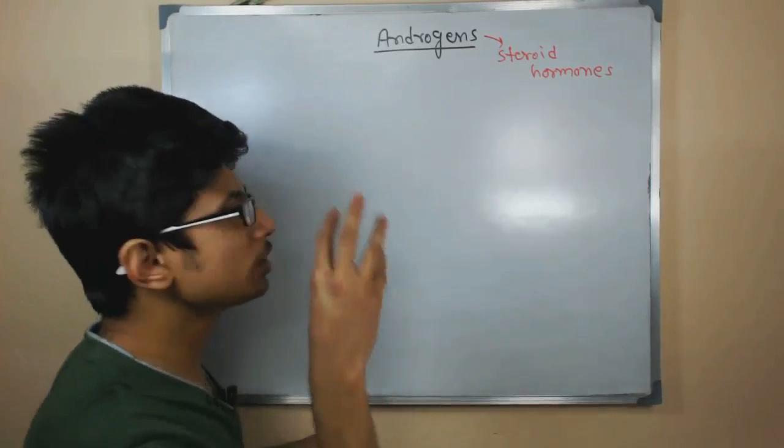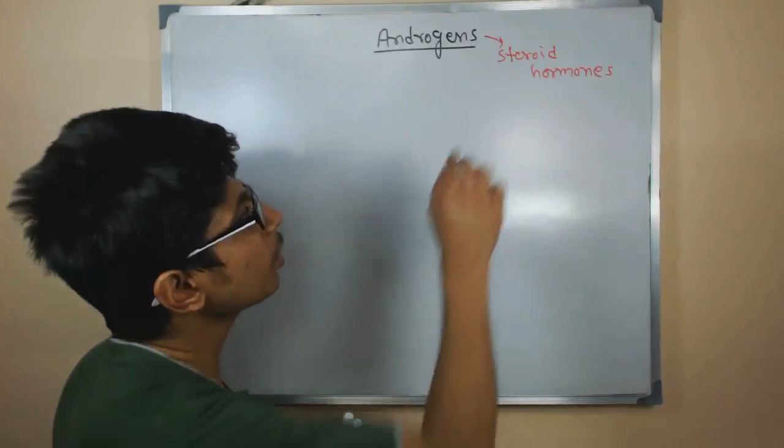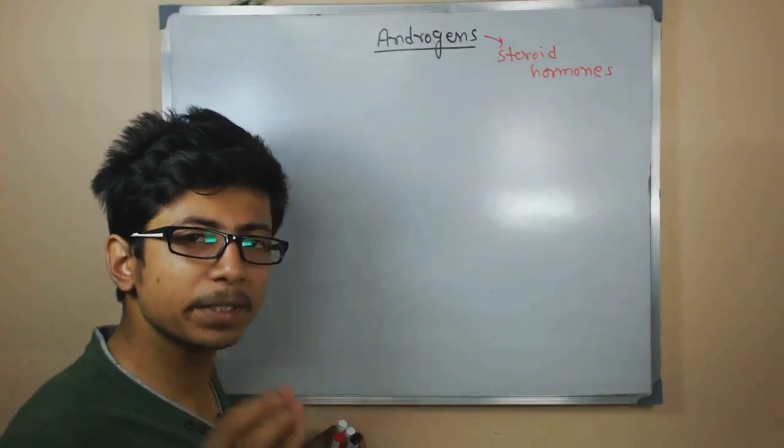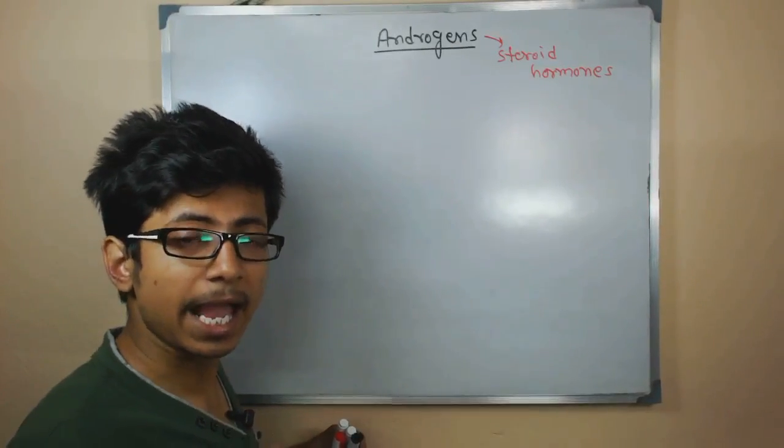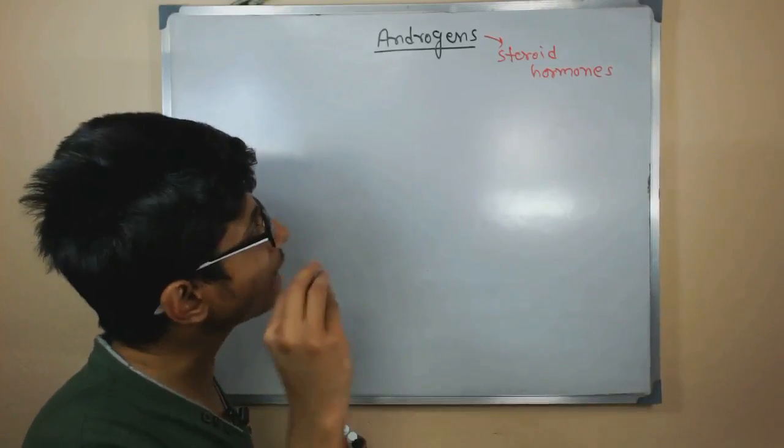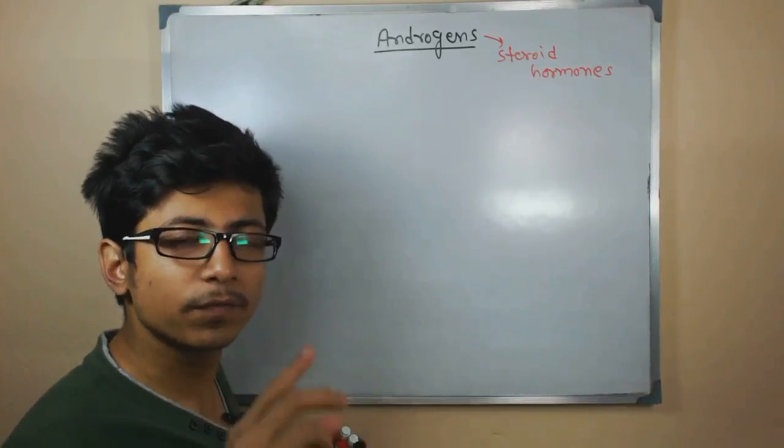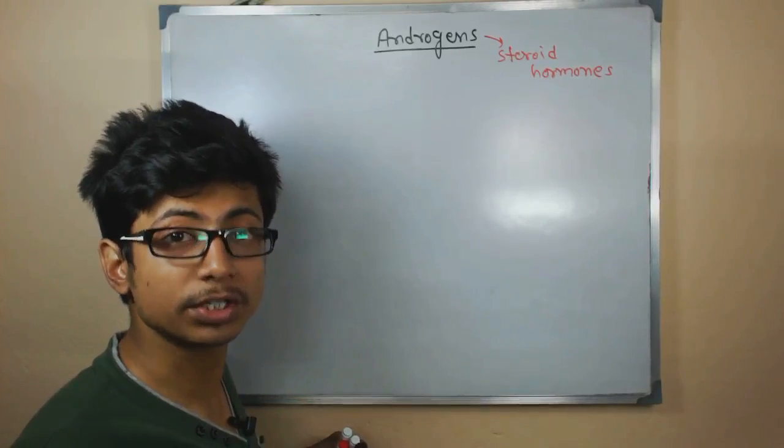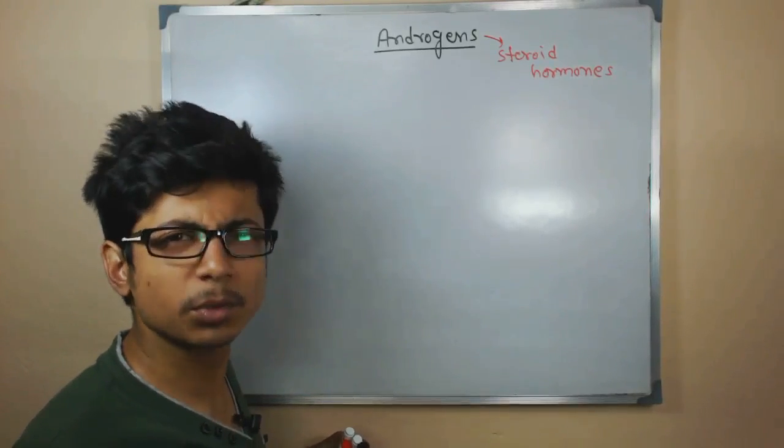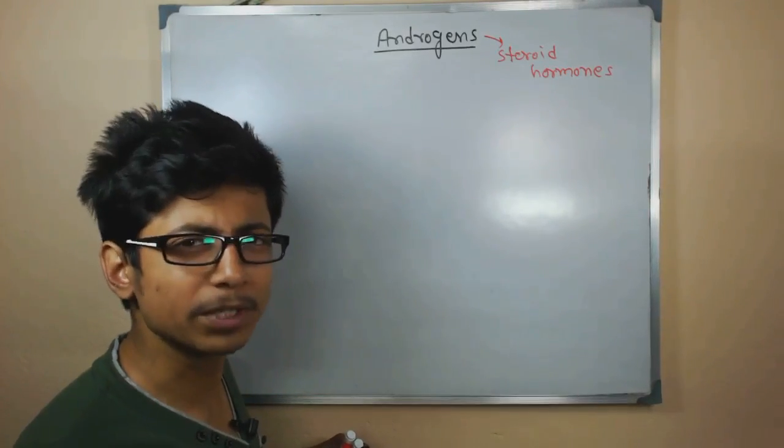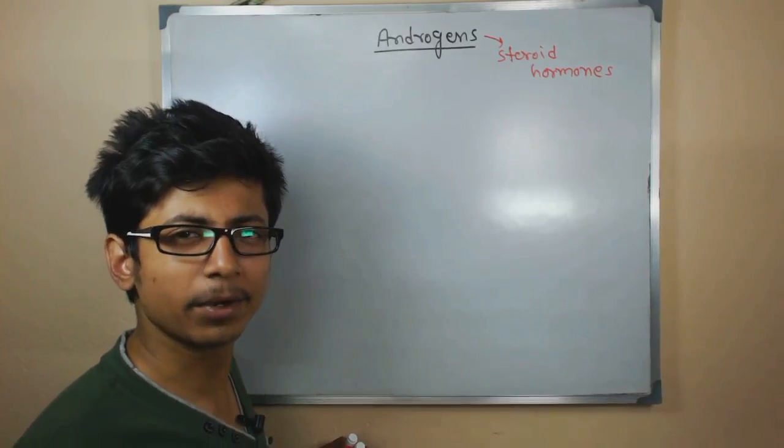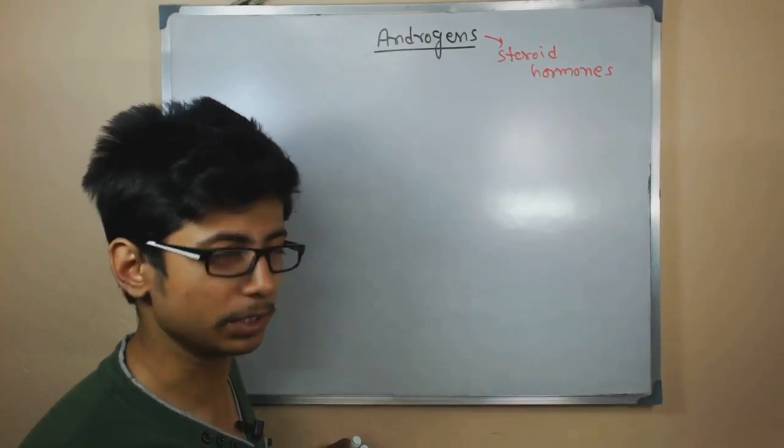And the thing is these androgens are a type of steroid hormones, because they have typical steroid characteristics, and the precursor for all these androgens hormones is a four ring structure called cholesterol. And we know what cholesterol is, because nowadays it is very common, a kind of bad guy in our life, because it is found in our blood.